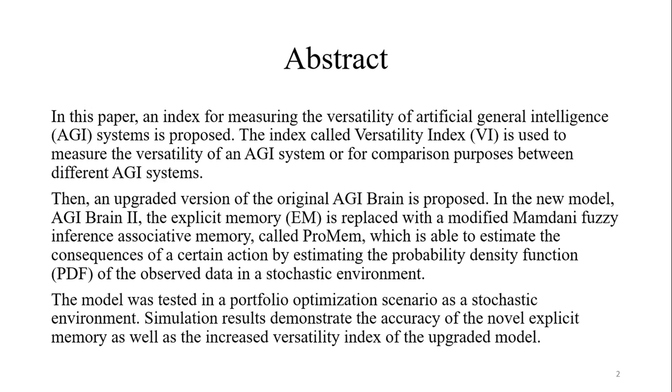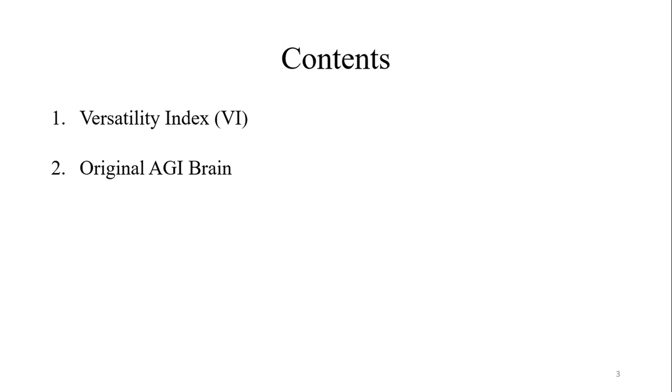The rest of this presentation is organized as follows. After a brief introduction to artificial general intelligence, the versatility index will be introduced, and then the structure of AGI Brain — the original AGI Brain and AGI Brain 2 — will be described, followed by conclusion and future works.